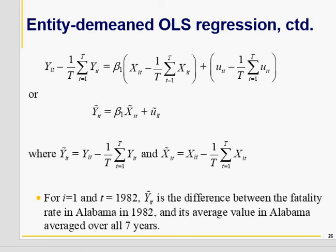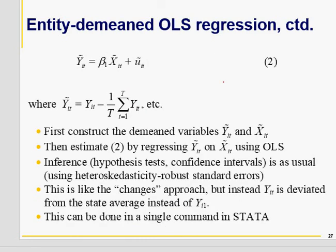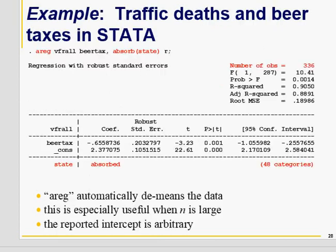Instead of regressing Y on X directly, we construct two new demeaned variables. The command areg in Stata allows you to regress fatality rate on beer tax and absorb the state effects, since you are not interested in 47 dummy variables — your interest is only the effect of beer tax on fatality rate. The areg command does this automatically, and I have done this in R as well, so you can download the document.